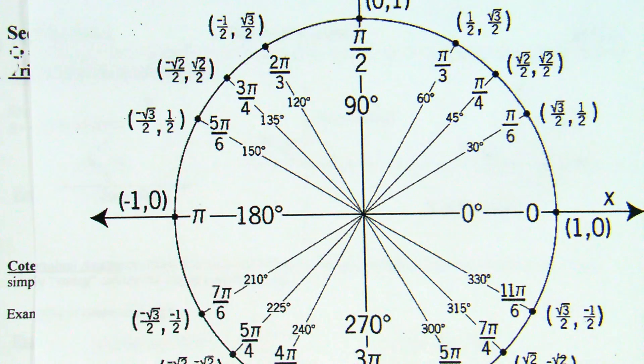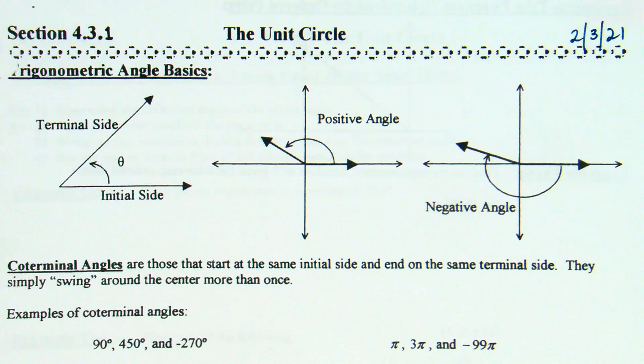You'll also notice on the unit circle I just handed out that where it says 30 degrees, it also says pi over 6 radians. On the unit circle in your notes on that previous page. Again, those light leaves are there. So, we'll learn more about it as we go. A little bit of vocabulary.